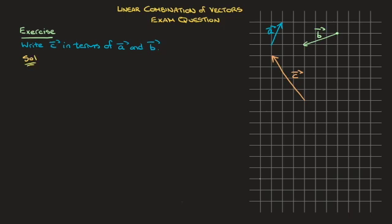When working through a question like this, the first thing to do is to make a note of each of these three vectors' components. Looking at vector A, we can see that to get from its tail to its head, we move one unit to the right and two units upwards. So in component form, vector A is equal to (1, 2). Looking at vector B, to get from the tail to the head, we move three units to the left and one unit downwards, so that vector is equal to (-3, -1).